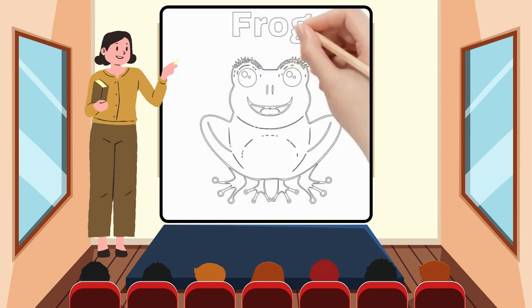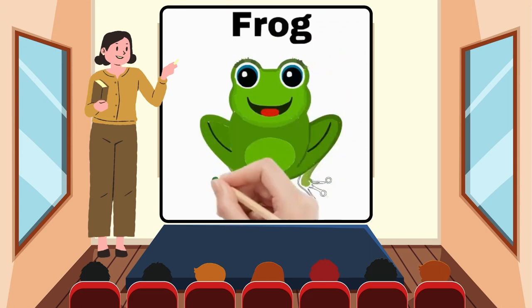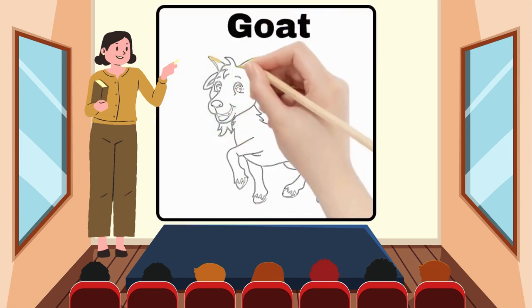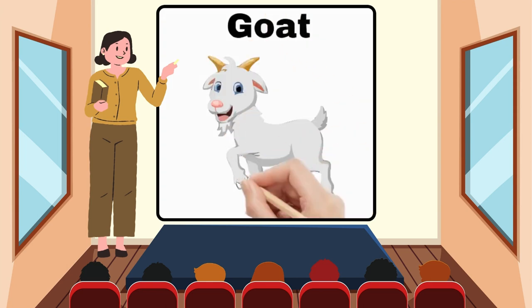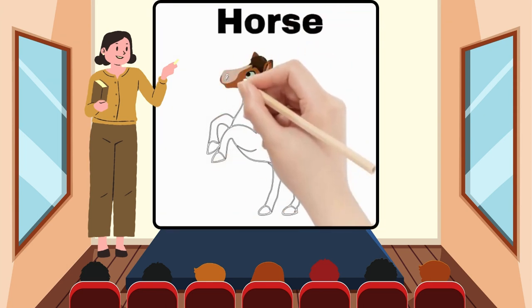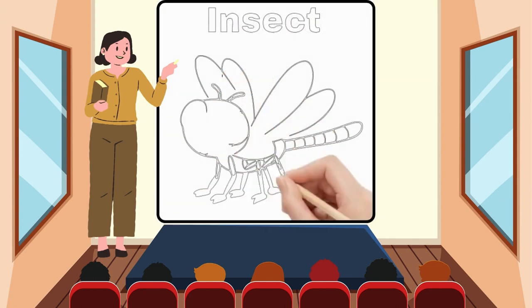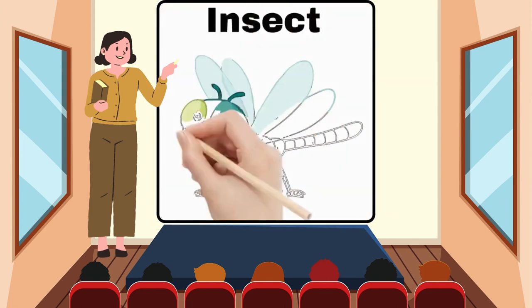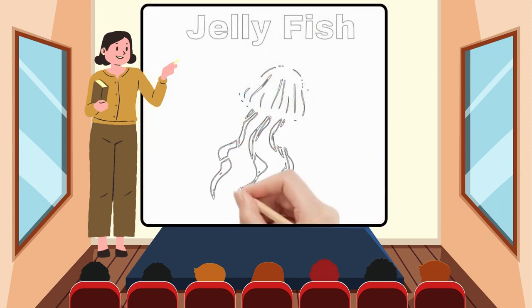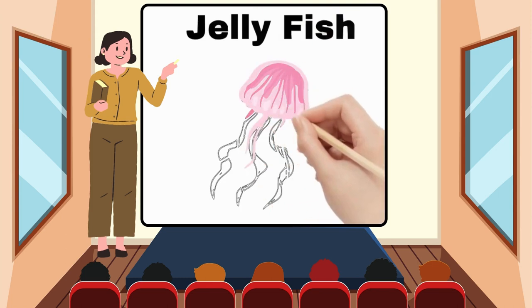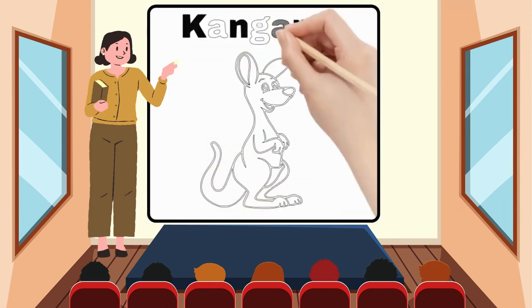F for Frog. G for Goat. H for Horse. I for Insect. J for Jellyfish. K for Kangaroo.